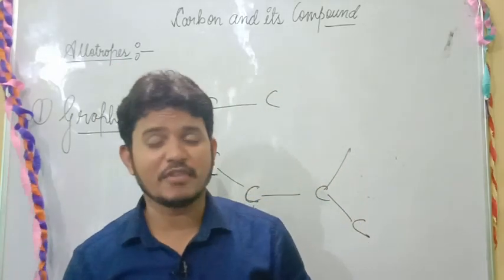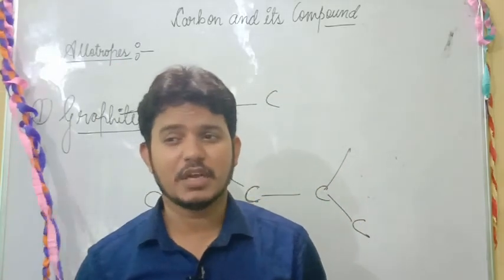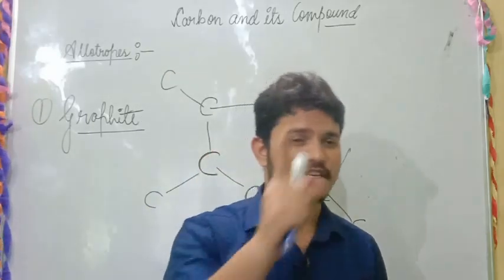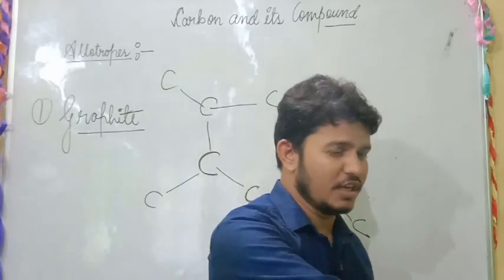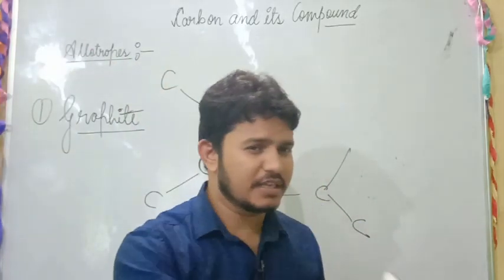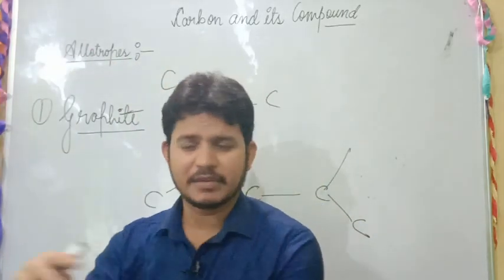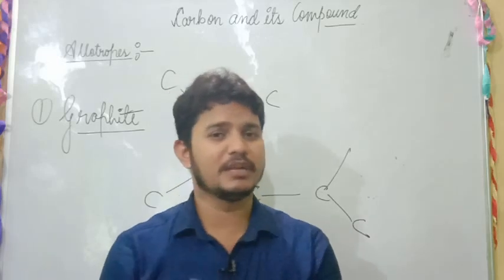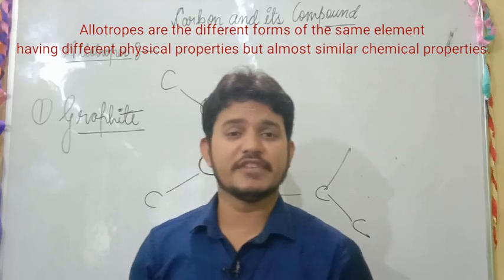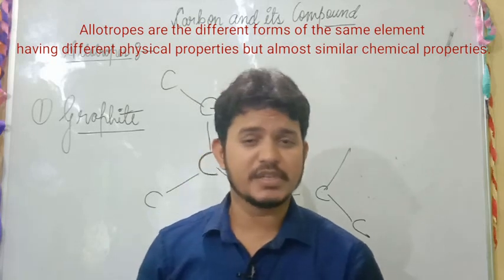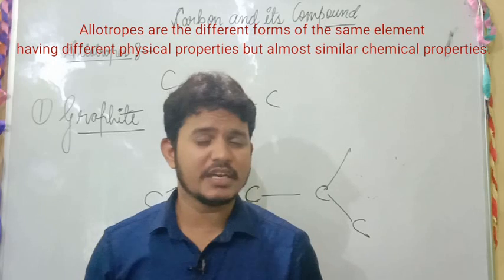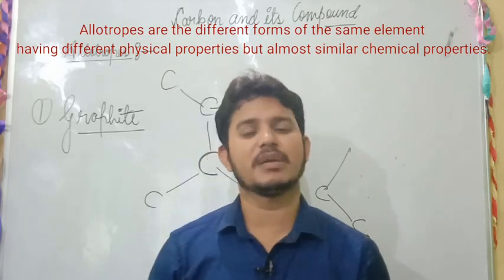Allotropes are nothing but the different forms of elements. That means they have different structure, different physical property, different arrangement of the atoms. But they are similar in chemical property — they have similar chemical property.